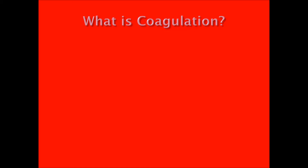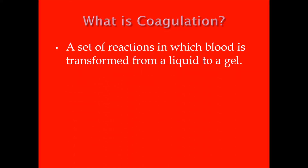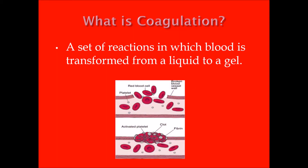So what is coagulation? It's a set of reactions in which blood is transformed from a liquid to a gel. As you can see from this photo, we have a broken blood vessel wall with red blood cells and platelets forming to plug it. Activated platelets, clot, and fibrin are all formed within this coagulation.